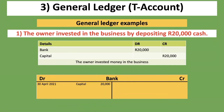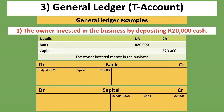Now let's open the T-account for capital. Capital is an equity account that increases on the credit side. So we open the T-account, place the entry on the credit side, put the date — 30 April 2021 — and the detail is bank, showing what the owner contributed. The amount is 20,000 rand. We put bank there because the owner was contributing money, showing how the capital came in.